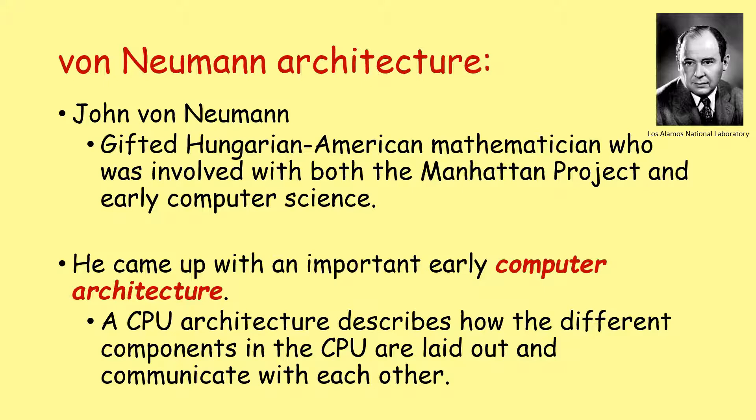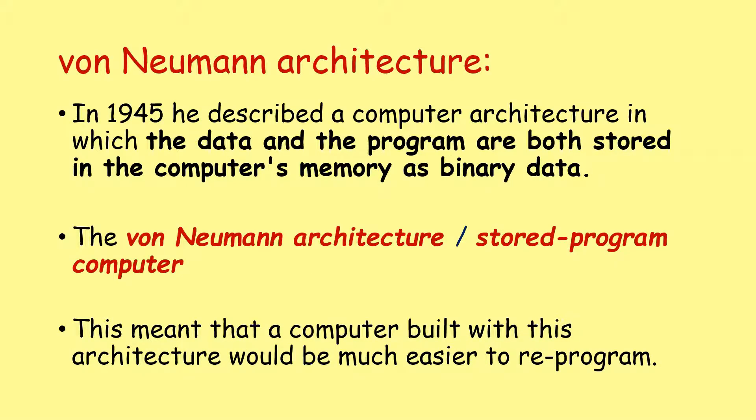Towards the end of World War II, he turned his vast intellect to computer science, and he came up with an important early computer architecture that helped solve some of the problems of earlier computers like the Colossus or the ENIAC. A CPU architecture describes how the different components in a CPU are laid out and communicate with each other. In 1945, he described a computer architecture in which the data and the program are both stored in the computer's memory as binary data. This became known as the Von Neumann architecture or the stored program computer. In some places, it is also referred to as the Princeton architecture because that's where he was based at the time.